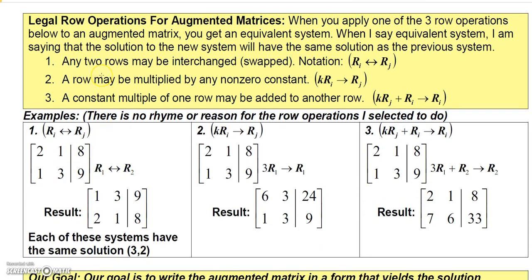There are three legal row operations you can perform on augmented matrices. First, you can interchange or swap any two rows. Second, you can multiply a row by a nonzero constant. Third, you can multiply a row by a constant and add it to another row, replacing that row with the result. So you can swap rows, multiply a row by a constant, or multiply a row by a constant and add it to another row.